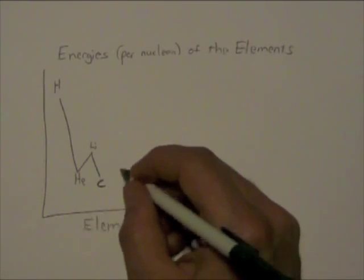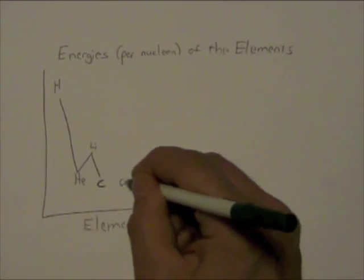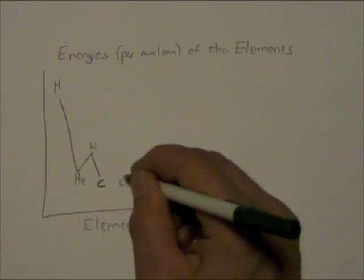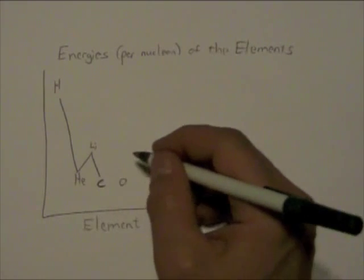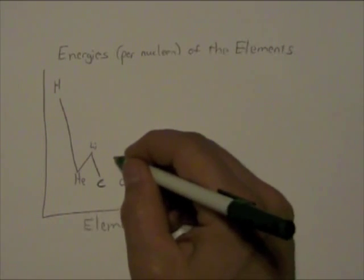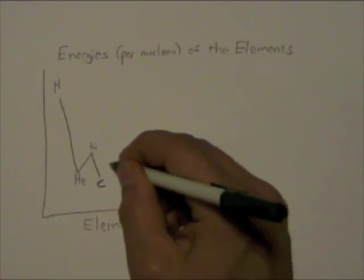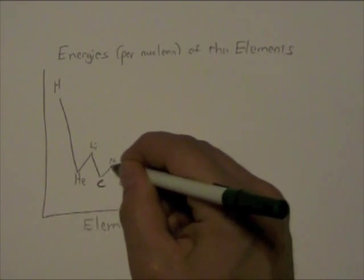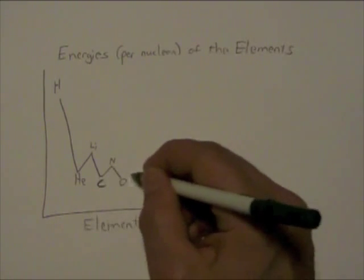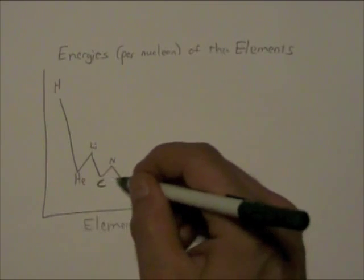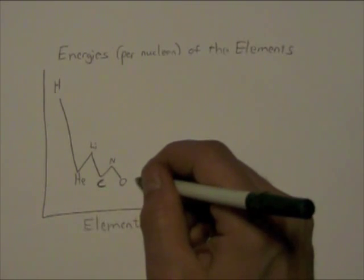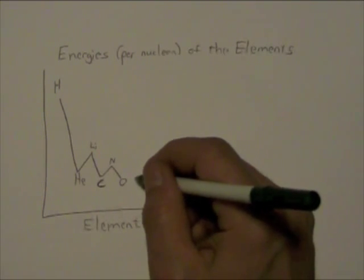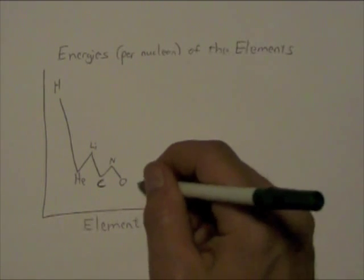So if you add one helium nucleus to carbon, you get oxygen, which is just a little bit further downhill than carbon. Now, you'll notice there's an odd numbered element in between, which is nitrogen. And that actually requires going uphill. So not much nitrogen is made. And again, if you add a helium to an oxygen, you get neon.